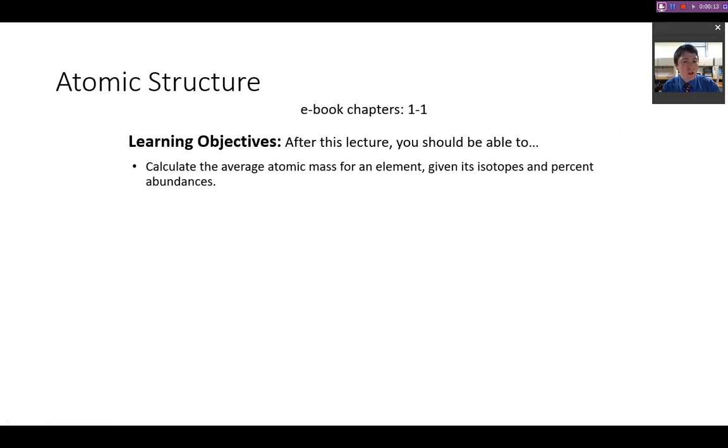After reading this section and watching this video, you should be able to calculate the average atomic mass for any element, given its isotopes and percent abundances.